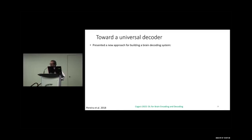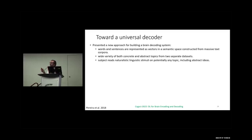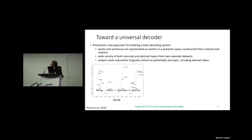In the Pereira work, they developed a new approach: rather than just focusing on concrete nouns, they focused on both concrete and abstract nouns. For example, 'success' is an abstract word in the Pereira dataset. Out of 180 words, around 100 are concrete nouns, around 60 are abstract words, and there are some verbs and function words. They used a GloVe model for representations, unlike earlier works that used manual features from Amazon Mechanical Turk.